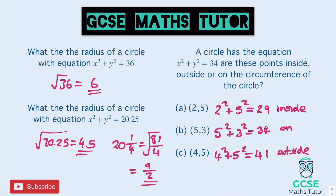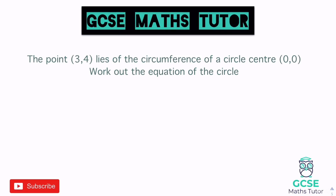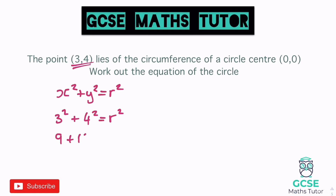So there's just a bit of an understanding about the actual circle equation — how we can use it to find the radius, and how we can use it to determine if points are on the circumference or not. Now: the point (3, 4) lies on the circumference of a circle, centre (0, 0). Work out the equation of the circle. Since the point is on the circumference, we can use the equation: 3 squared plus 4 squared equals the radius squared, giving 9 plus 16, which equals 25. So the equation of the circle is x squared plus y squared equals 25.